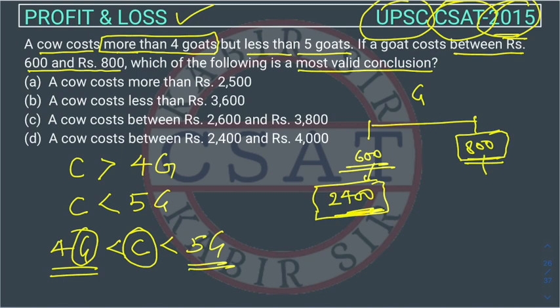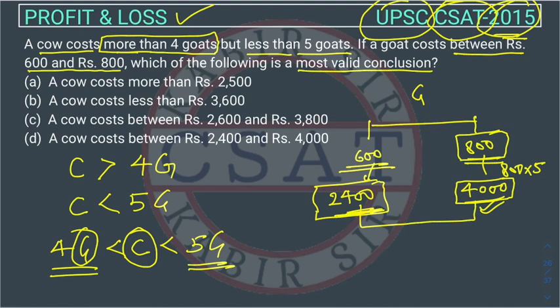If there are five goats priced at 800 each, that comes to 5 × 800 = 4000. The maximum price would be 4000, and since the cow price is less than five goats, the cow price will never go above 4000. So the cow price is between 2400 and 4000.